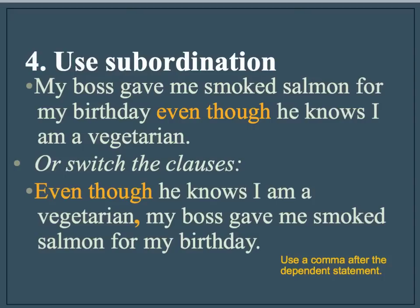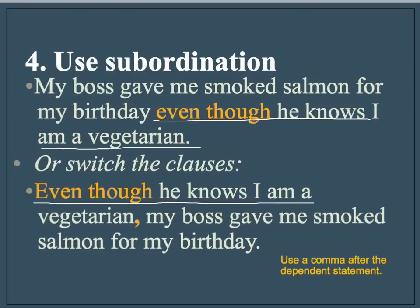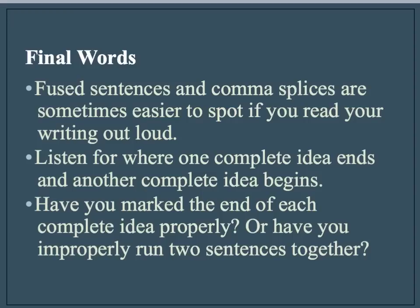A word about punctuating subordinate clauses. When your dependent clause is the second clause in the sentence — for example, "My boss gave me smoked salmon for my birthday, even though he knows I am a vegetarian" — no comma is needed before the dependent clause. But if your dependent clause comes first in the sentence, like "Even though he knows I am a vegetarian," put your comma right after it, and then continue with the main clause: "My boss gave me smoked salmon for my birthday."